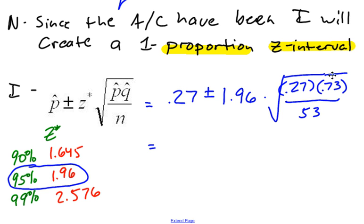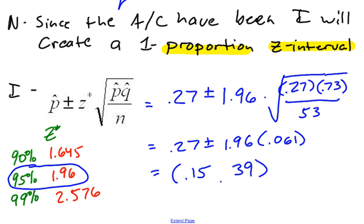Now, I'm not going to do the math. I trust that you can do the math here. But what I end up getting is 0.27 plus or minus, let me do the math here, 1.96 times 0.061. I just said I wasn't going to do the math, and now I'm doing it. But here we go. When I do the addition and subtraction here, I end up getting 0.15 as my lower end of my interval, and 0.39 as the upper end of my interval. So I have found my interval.